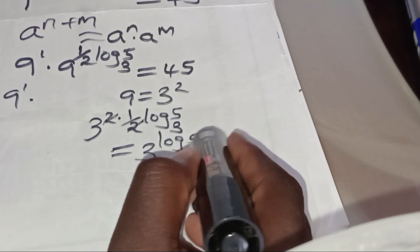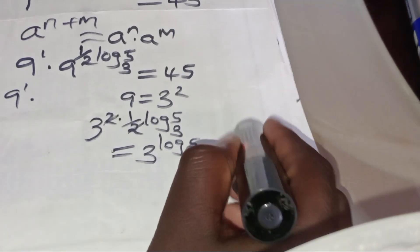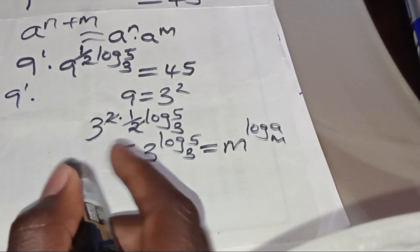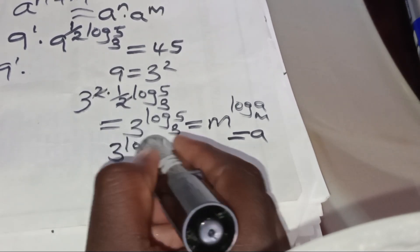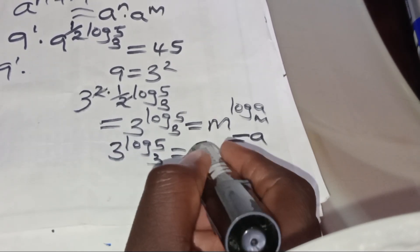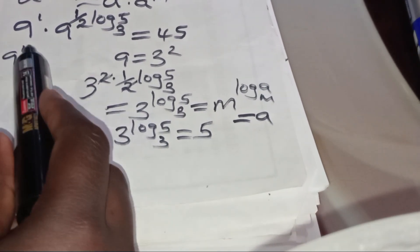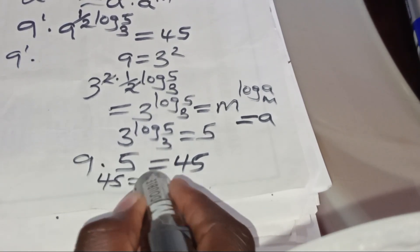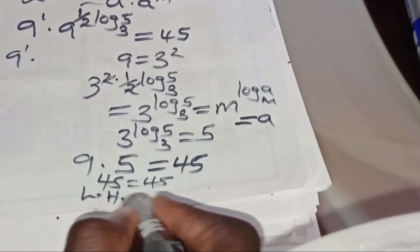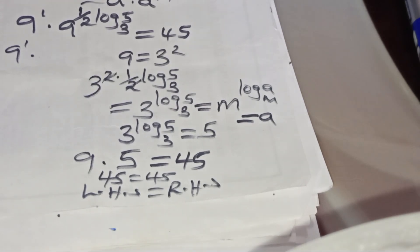3 to the power of log₃5 is in the form of m to the power of log_m(a), which we can express as a. So, 3 to the power of log₃5 is essentially equal to 5. That means we have 9 multiplied by 5, which gives us 45. So 9 times 5 is 45, meaning the left-hand side equals the right-hand side. This affirms that the value of x, which is 1 plus one-half log₃5, actually satisfies the equation.